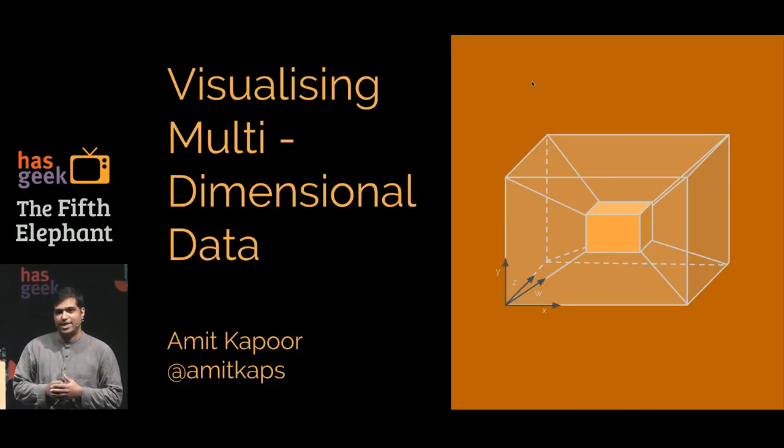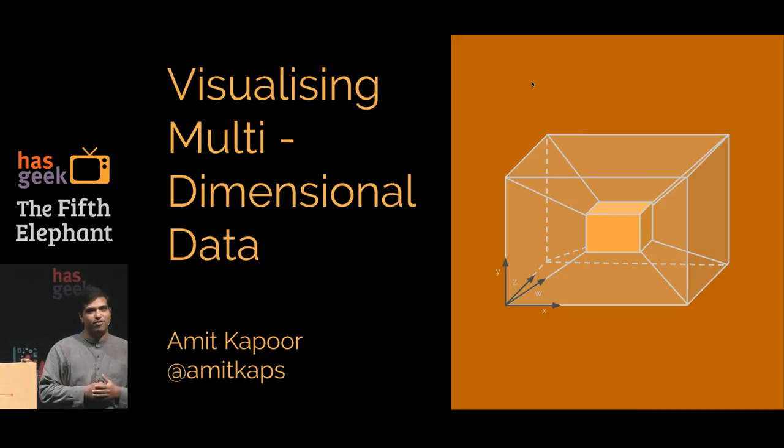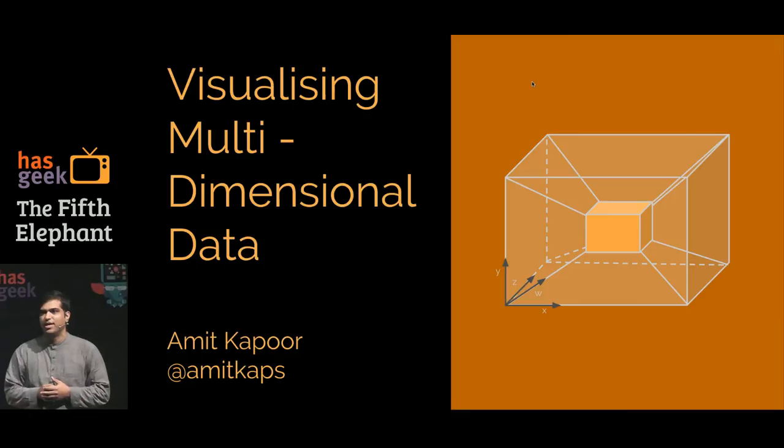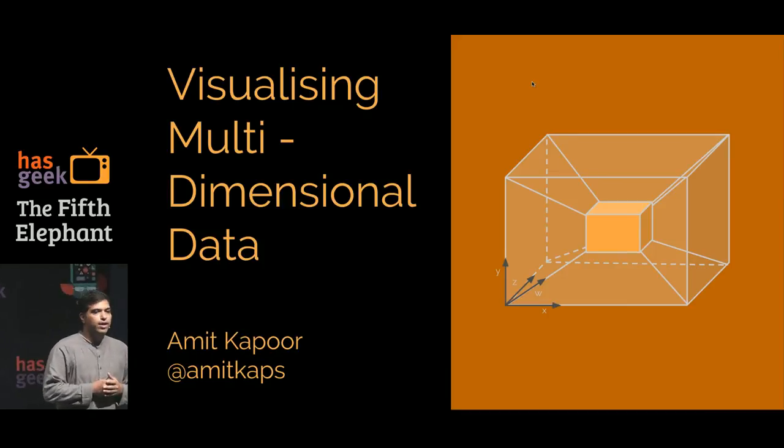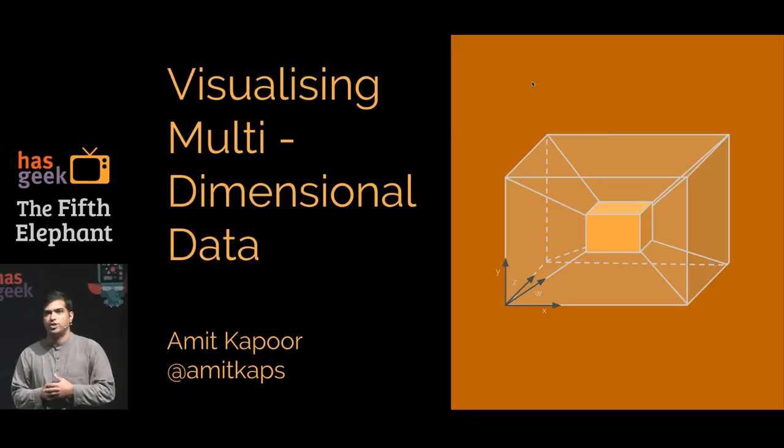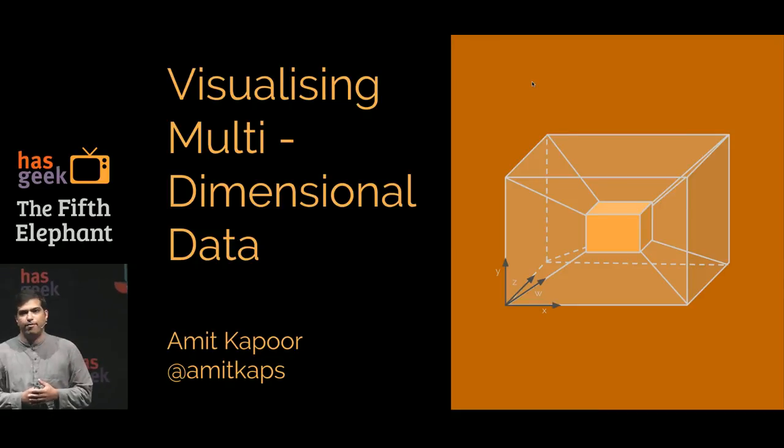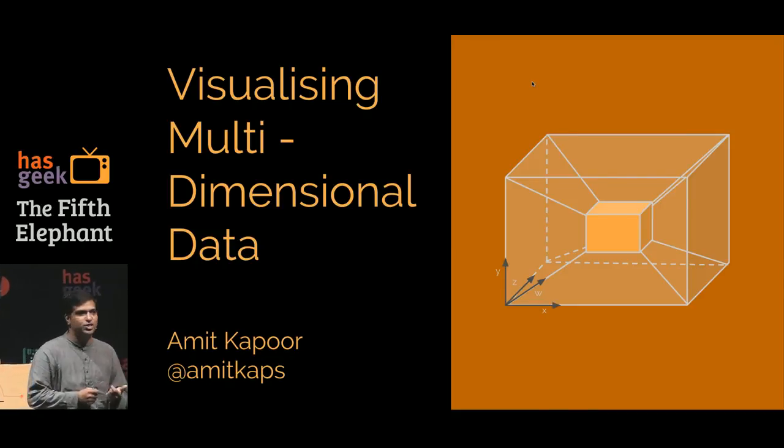That's a Tesseract, which is to the fourth dimension what the cube is to the third dimension. The way to think about this is if you take a shadow of a cube, which is a square, and join two squares, you get a cube. If you take a shadow of a Tesseract, which is a cube, and join those two cubes, then you get a Tesseract. That is one way to look at four dimensions. And already it is quick to see that it's not that easy to think in four dimensions.